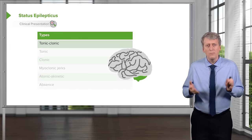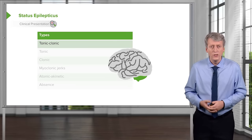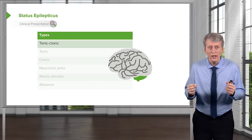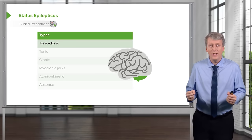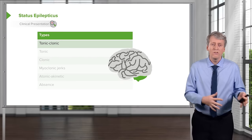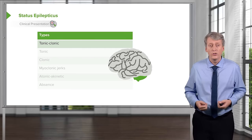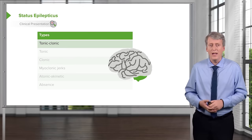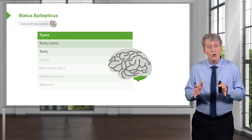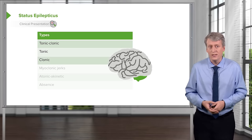The types of seizures can be categorized in many different ways. Tonic-clonic seizures are the ones you classically see on television — an initial tonic phase of stiffening and then a clonic phase of shaking. Patients usually fall down, they may have loss of bladder or bowel function, and they may be very sleepy afterwards or have Todd's paralysis. They may also have just a tonic phase or just a clonic phase.